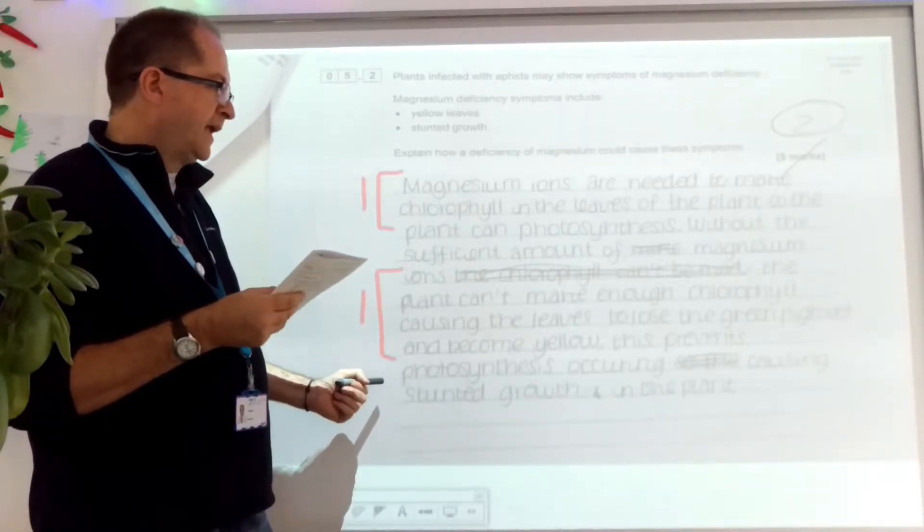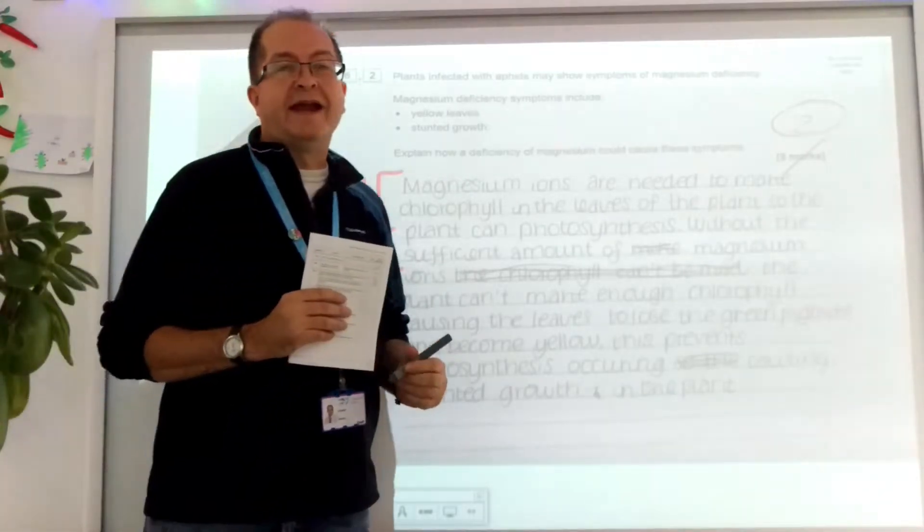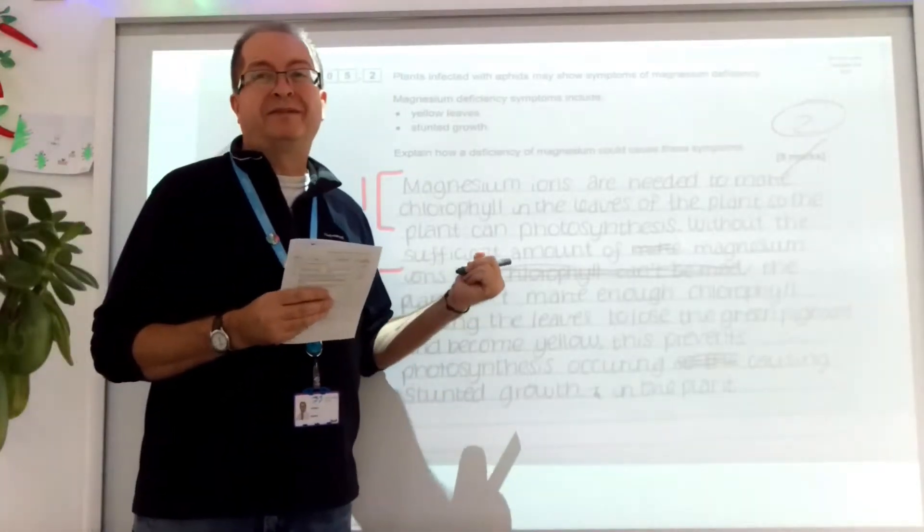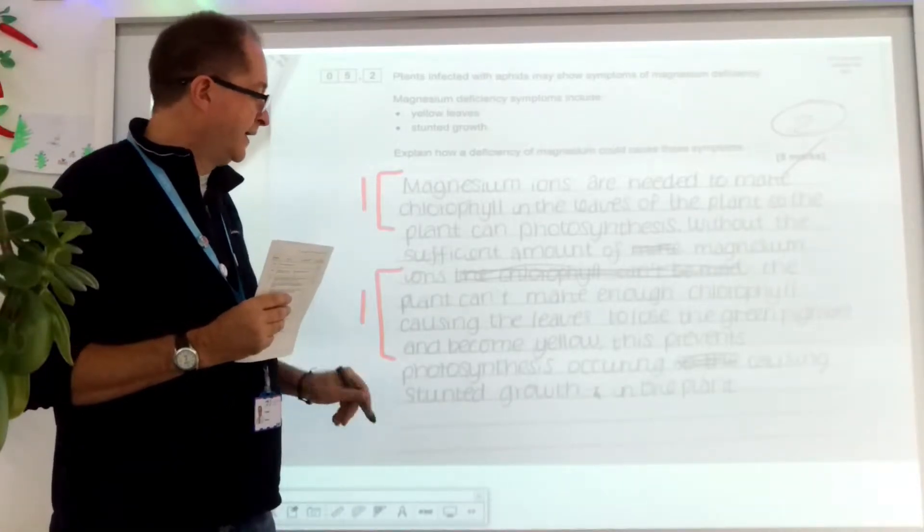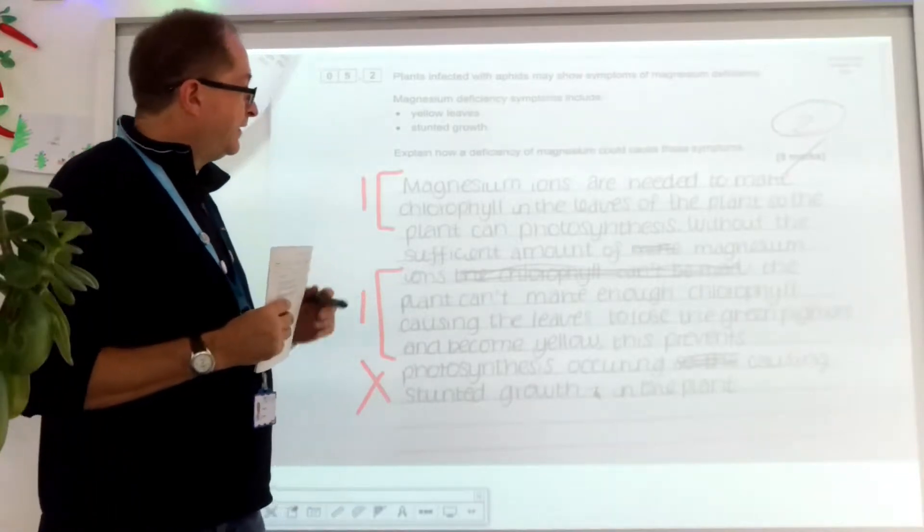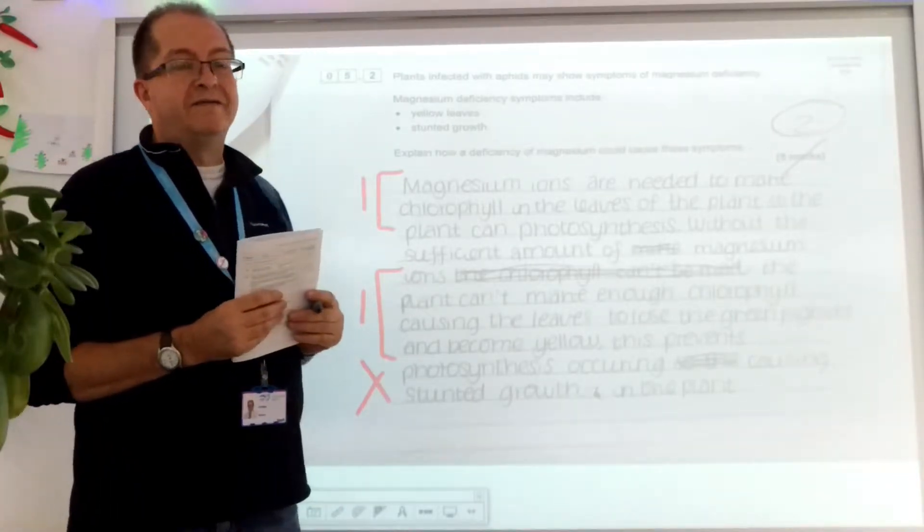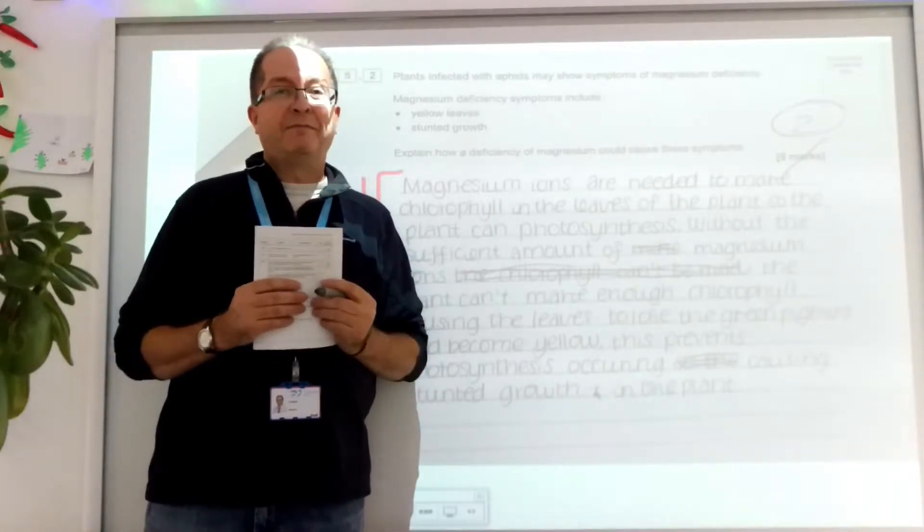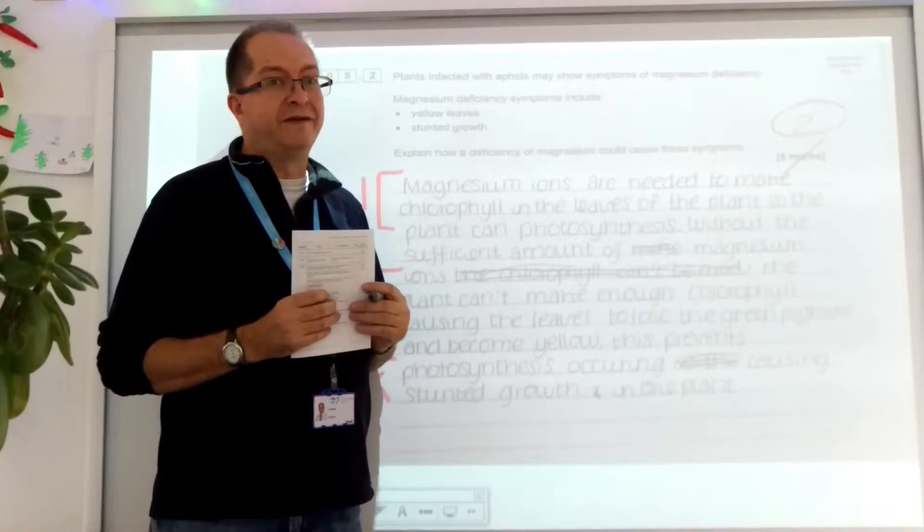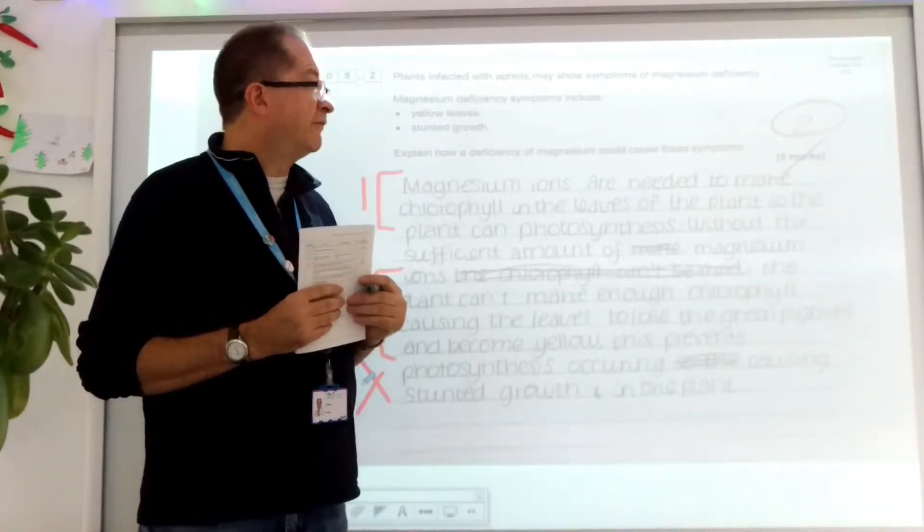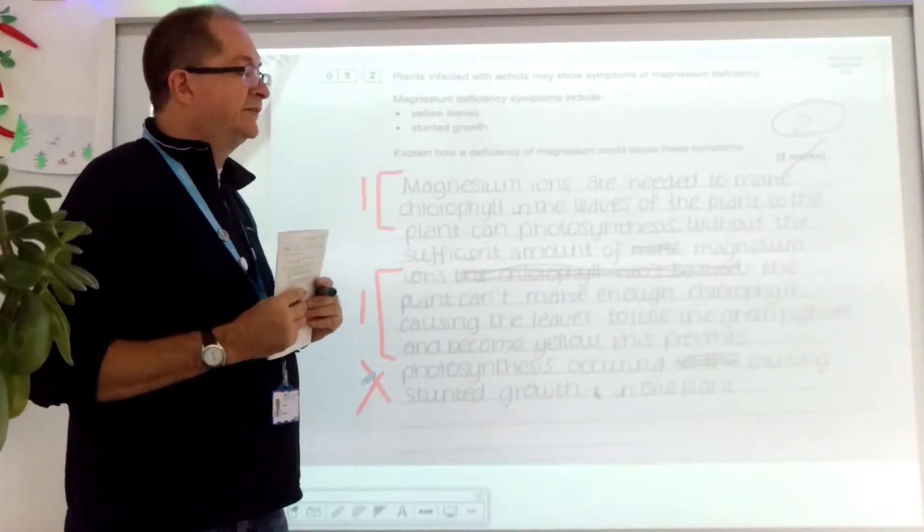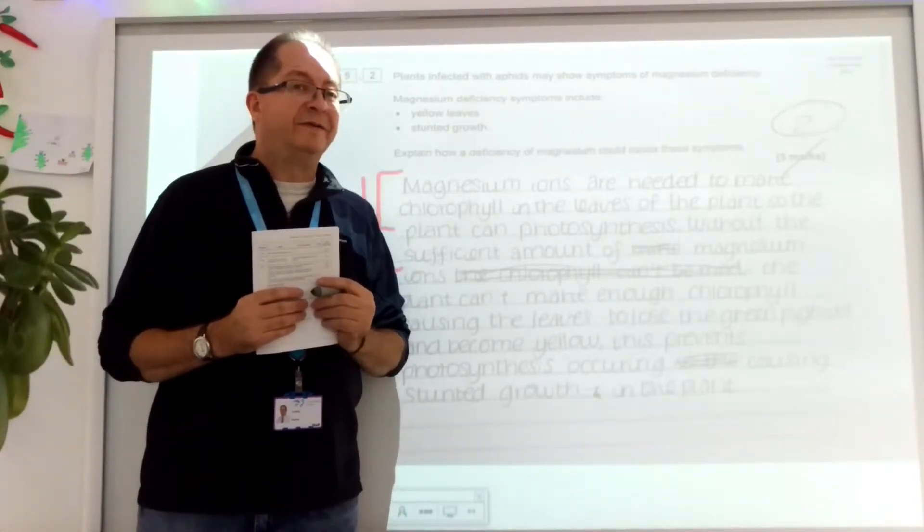But they then go on to say it causes stunted growth in the plant. Well, how? They haven't explained how, so they can't access that next mark. So I'm afraid we've got a big uh-uh there. And they get two marks out of five. Now, depending on what the exam board had for breakfast, that's going to be maybe, if they're lucky, a level five. That's how you get a level five. Think about doing a little bit better. They've explained the yellow leaves, but they haven't explained the stunted growth. So let's move on to someone else.